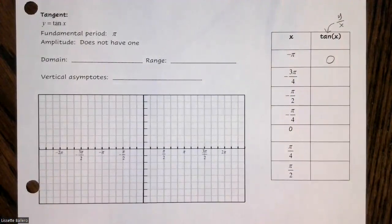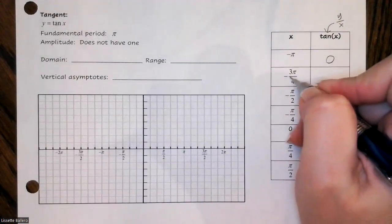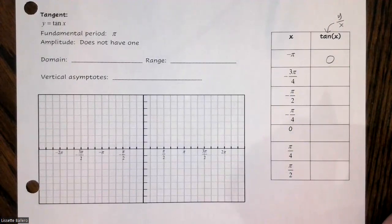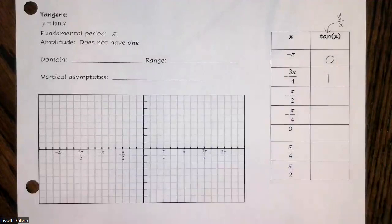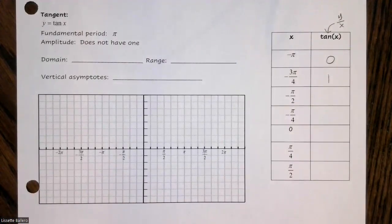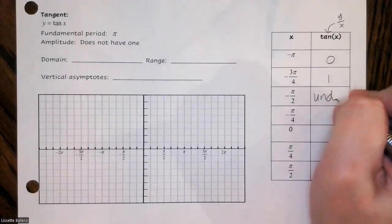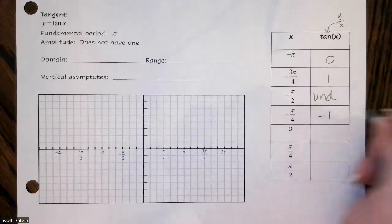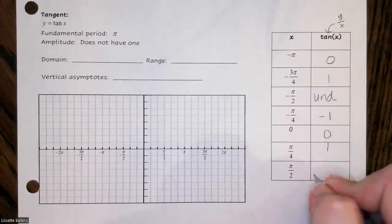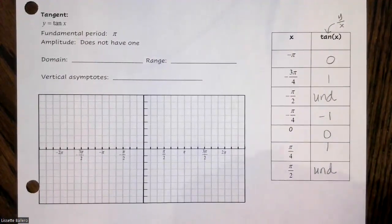At negative 3π/4, the ones with four in the denominator — that's √2/2 and √2/2. This is in the second quadrant, so they're both negative, giving us positive one. At negative π/2, that's 270°, so it's one over zero — undefined, we can't divide by zero. Continuing the table, we get negative one, zero, one, and then undefined. It's good to know that unit circle.